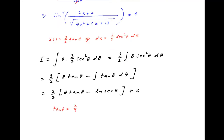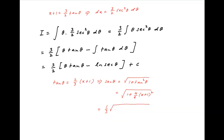Now tan θ equals (2/3)(x plus 1), therefore sec θ, which equals square root of 1 plus tan²θ, equals square root of 1 plus (4/9)(x plus 1)². This equals (1/3) times square root of 9 plus 4(x plus 1)², and therefore the value of sec θ equals (1/3) times square root of 4x squared plus 8x plus 13.